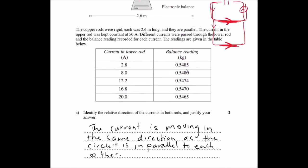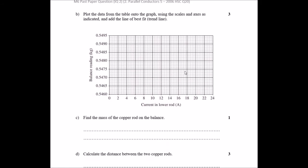Okay, I have the data up. Let's graph it out. So when we have a current of 2.8, so around this point here, our balance reading is 0.5485. So around here, we start around at that mark there.